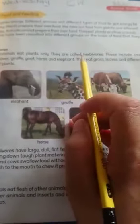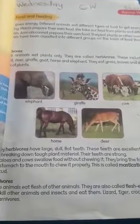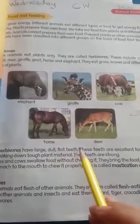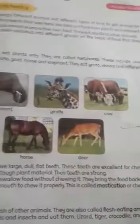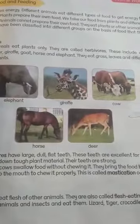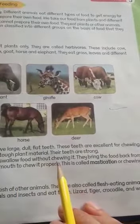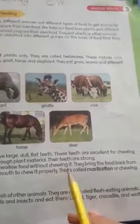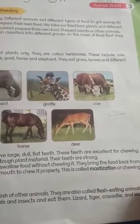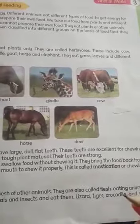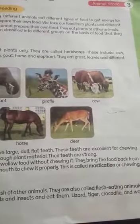So, we read in this passage that herbivores are those animals who eat only plants. They have dull, flat teeth, which are excellent for chewing tough types of food materials. As for buffaloes and cows, they eat their food as raw material and then bring it back to their mouths to chew it again.